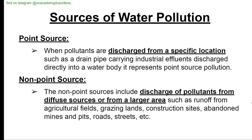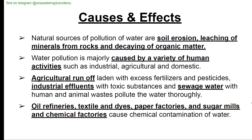Sources of water pollution: point source pollution occurs when pollutants are discharged from a specific location such as a drain pipe carrying industrial effluents directly into a water body. Non-point sources include discharge of pollutants from diffuse sources or larger areas such as agricultural fields, grazing lands, construction sites, abandoned mines, and roads. Natural sources include soil erosion, leaching of minerals from rocks, and decaying organic matter.